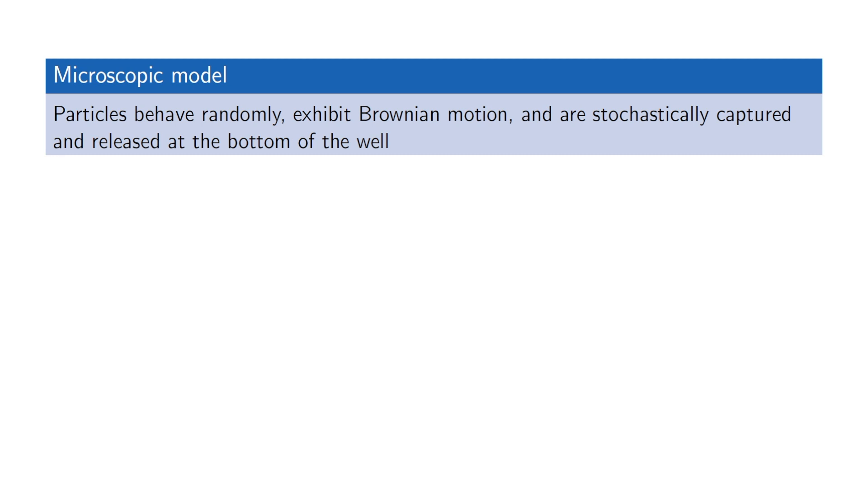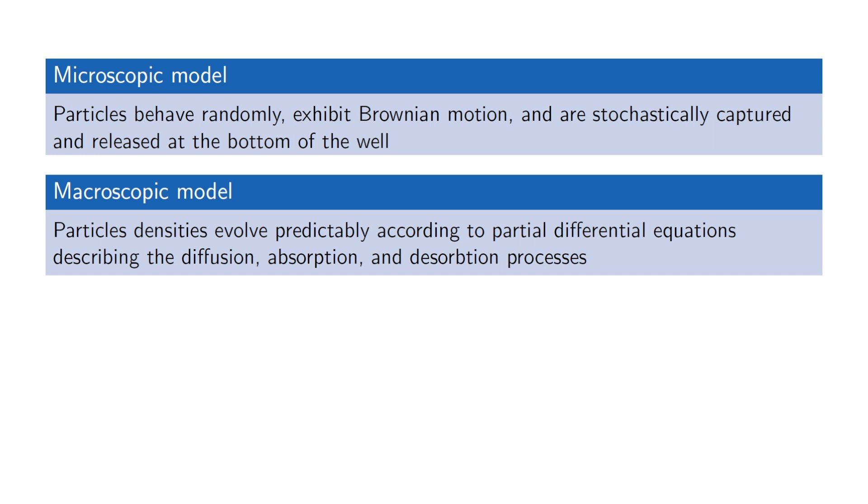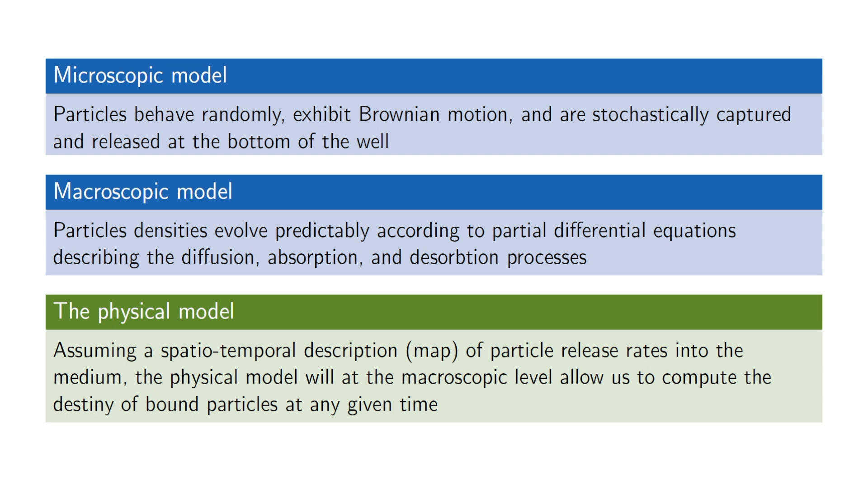To recap, at a microscopic level, individual particles behave randomly and exhibit Brownian motion, are stochastically captured and released at the bottom of the well. At a macroscopic level, the whole family of particles behave predictively, or at least the density of particles behave predictively according to differential equations that describe the diffusion, absorption, and desorption processes at the bottom of the well. This allows for a physical model which takes as input a description of where and when individual particles are released into the medium, and then predicts statistically where those particles will be captured. And that physical model can be used to invert the process and figure out where the particles came from.